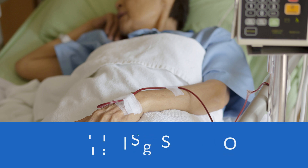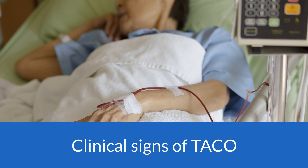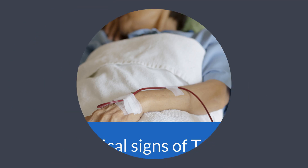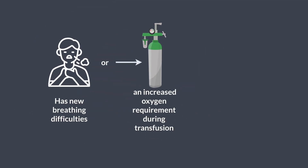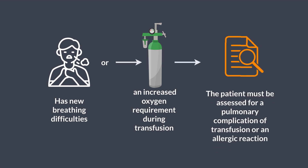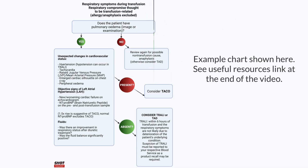It is important to recognise the clinical signs of TACO so patients can be treated as soon as possible. If a patient has new breathing difficulties or an increased oxygen requirement during transfusion, they must be assessed for a pulmonary complication of transfusion or an allergic reaction. This flowchart explains how the potential types of reaction can be differentiated.